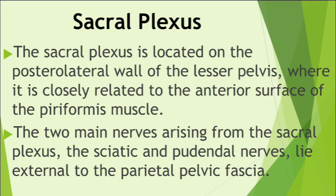The pudendal nerve is the main nerve of the perineum and the chief sensory nerve of the external genitalia. It is derived from the anterior rami of spinal nerves S2, S3, and S4. Accompanied by the internal pudendal artery, the pudendal nerve leaves the pelvis through the greater sciatic foramen between the piriformis and coccygeus muscles. It then hooks around the ischial spine and sacrospinous ligament and enters the perineum through the lesser sciatic foramen, supplying the skin and muscles of the perineum.